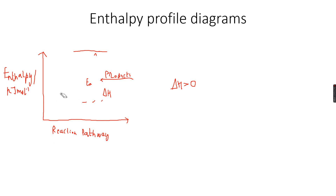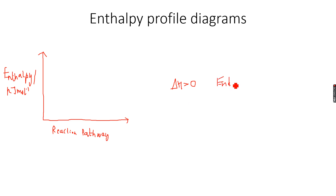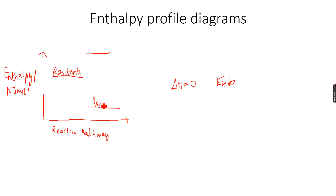This diagram is for an endothermic reaction. Now let's make one for an exothermic reaction, where heat energy is released. So the products have less energy than the reactants. We have the reactants, then the intermediate stage, and then the products.